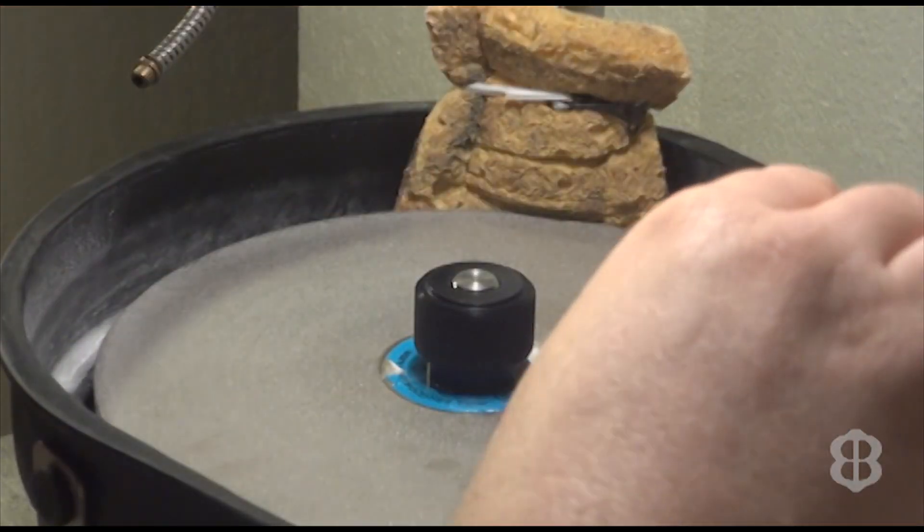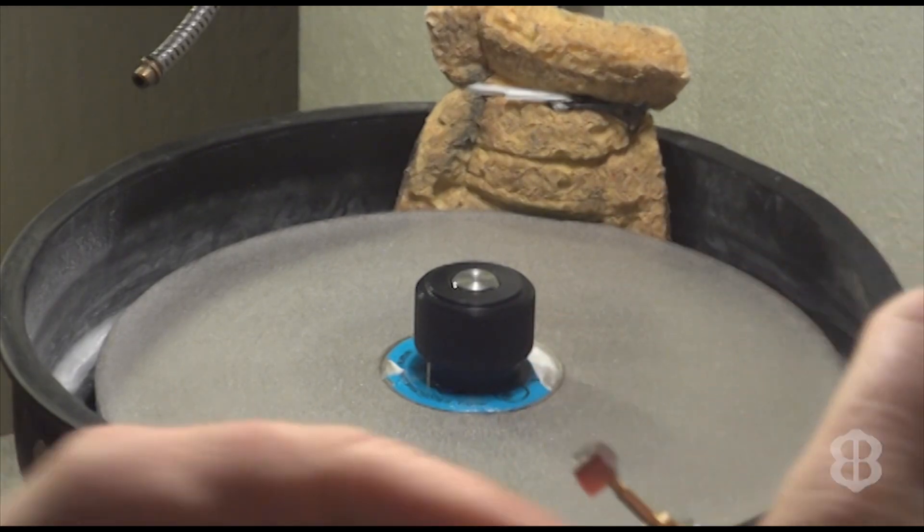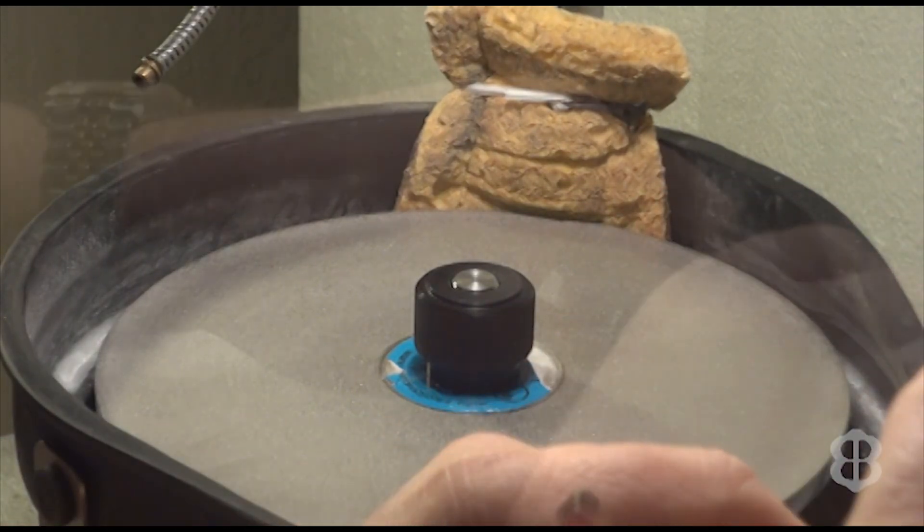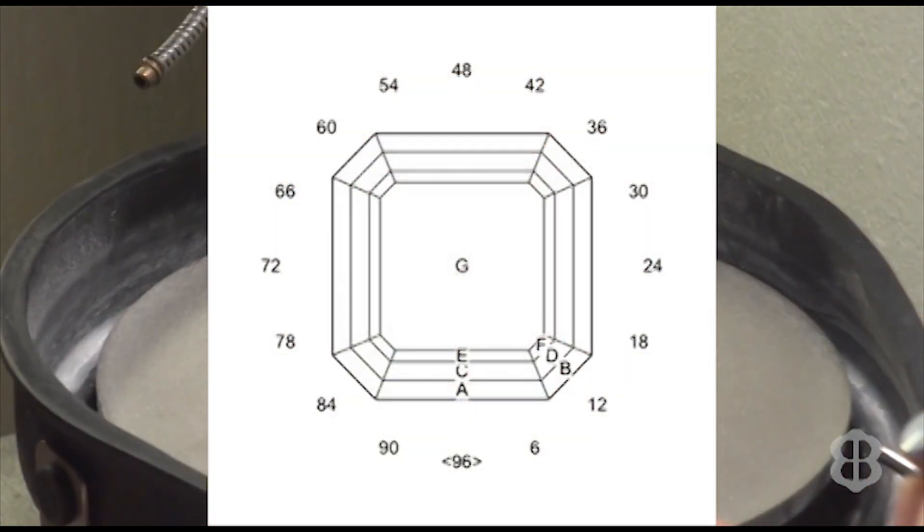Bring it down. Short side is 96 index and the other side is the 48 index. So the four angles we're interested in for the preforming is the 96, the 24, the 48 and the 72.